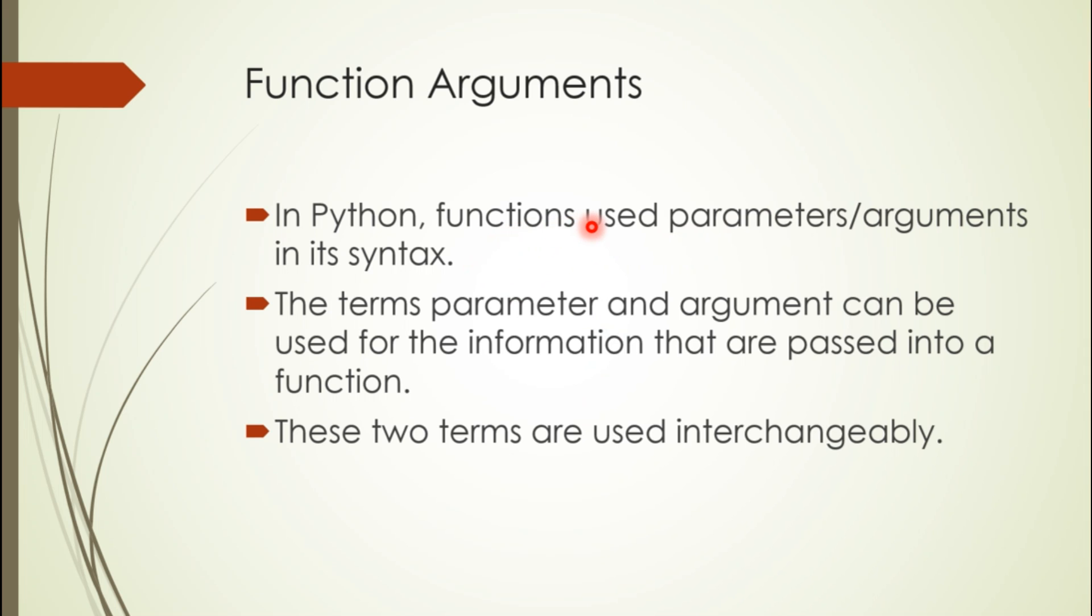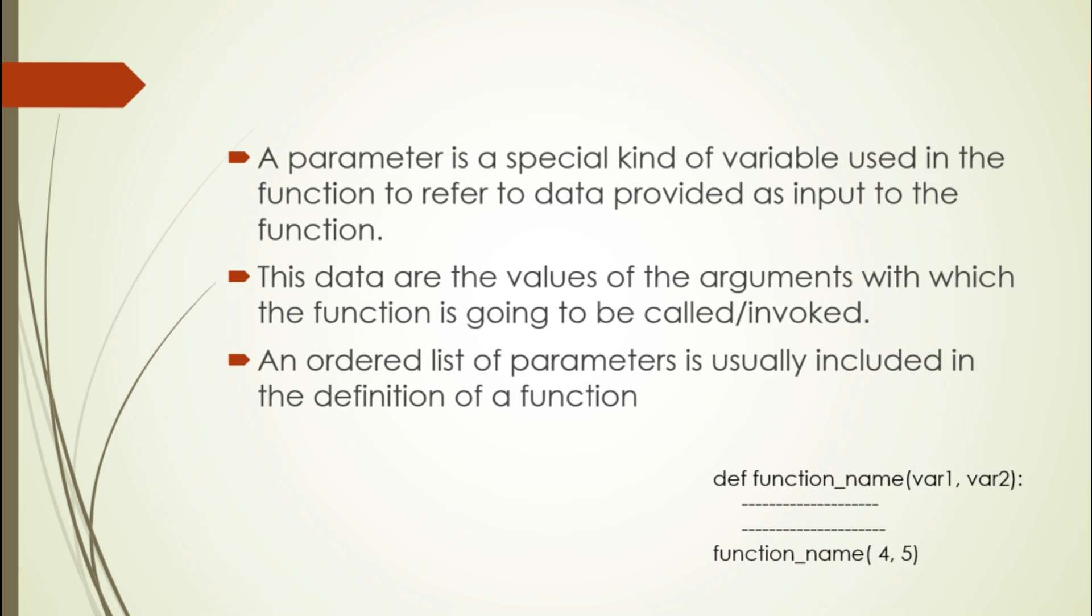When we write the syntax for functions, initially we have def, that is the definition keyword, then the function name, and finally the parentheses. Inside the parentheses, we pass parameters. Parameters are also known as arguments. In programming, these two terms are used interchangeably. These terms can be used for the information that is passed into a function.